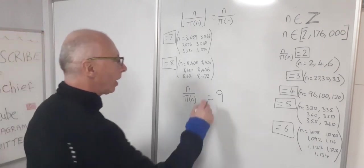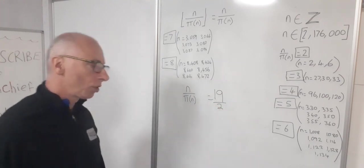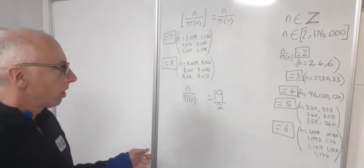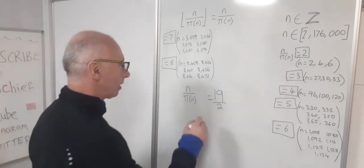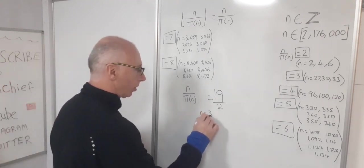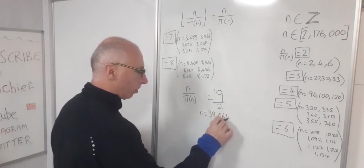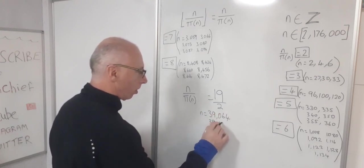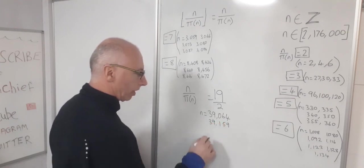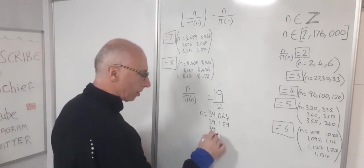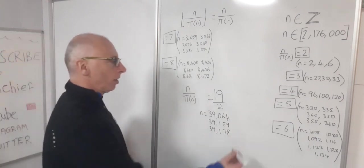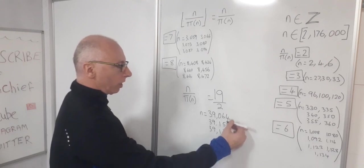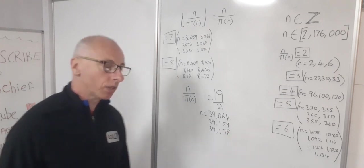I found a 19 over 2, which is just obviously 9 and a half. So for exactly 9 and a half, I found three numbers that would do that. So I found n equals 39,064, 39,159 and 39,178. Now, you can see there's multiples of 19 between each of these integers. So there's 95 here and 19 between these ones here.